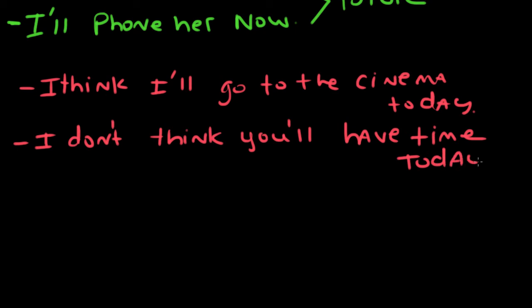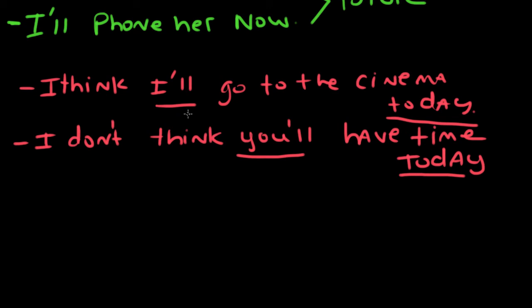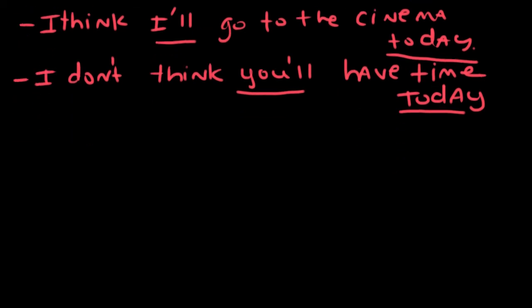In this instance, 'today' represents the future, and 'I will' and 'you will' represent the decision we made and the announcement of our decision. It's easy, right? We use 'will' in different situations.